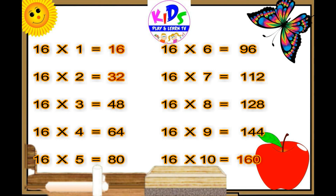16 sixes are 96, 16 sevens are 112, 16 eights are 128, 16 nines are 144, 16 tens are 160.